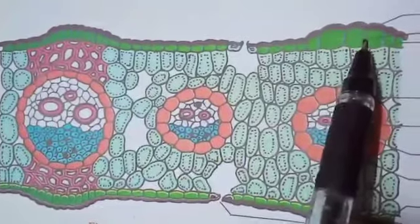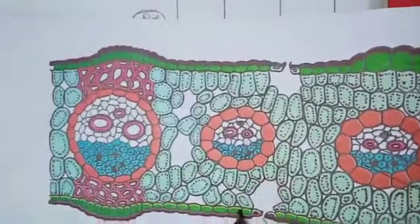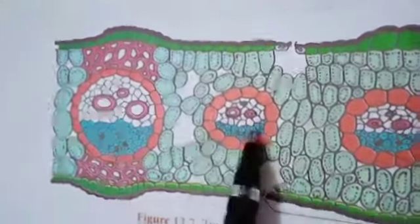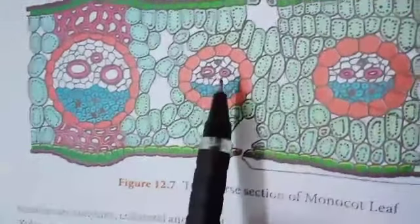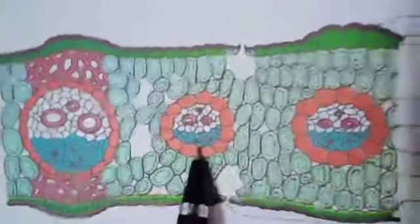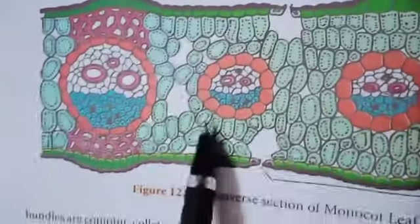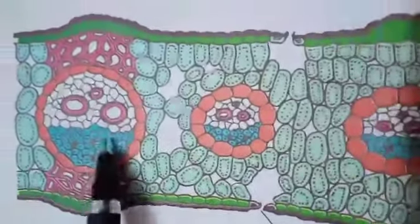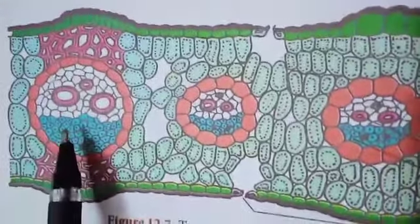Mesophyll tissue is present between both the upper and lower epidermis. It is not differentiated into palisade parenchyma and spongy parenchyma, unlike in a dicot leaf. The cells are irregularly arranged with intercellular spaces and contain chloroplasts. A large number of vascular bundles are present.